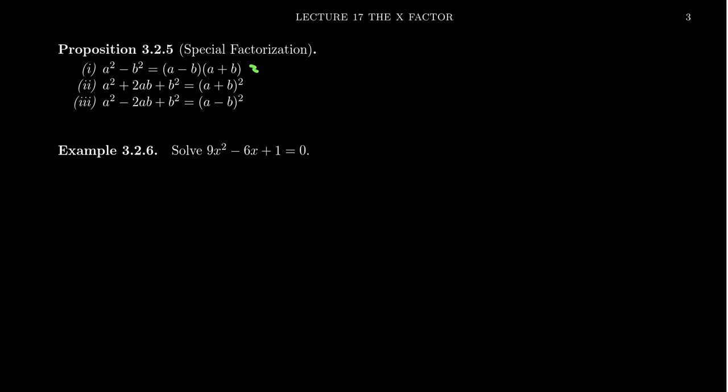You can verify this by foiling. A times a is a squared, you're going to get a plus ab, you're going to get a minus ab, and you'll get a minus b squared. The ab's cancel out, so you get a squared minus b squared. This difference of squares we're going to use all the time.